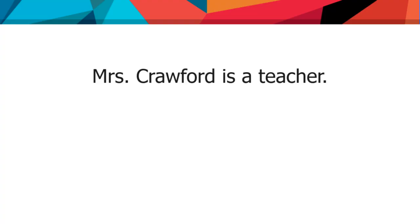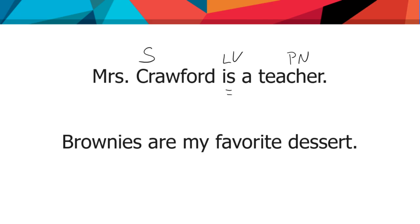'Mrs. Crawford is a teacher.' Mrs. Crawford is the subject. She is — state of being verb — she is what? She's a teacher. So we call this the predicate noun. See how that's like an equal sign: Mrs. Crawford equals teacher — it renames her. 'Brownies are my favorite dessert.' Brownies are dessert — it renames brownies. Brownies equal dessert, at least for that sentence.